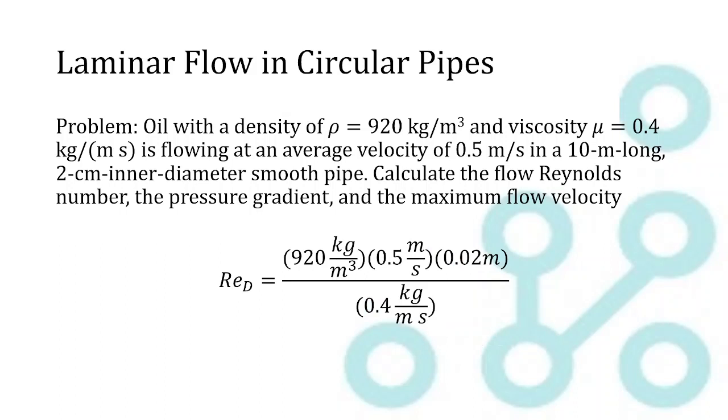So this is what that looks like. We're going to put the units in here as well and make sure that they all cancel since the Reynolds number is unitless. So we can go through, cancel our units here, kilograms cancel, seconds cancel, meters in the numerator cancel down to a single meter, and then those meters cancel as well. So we have all of our units canceling, which is what we want. And then if we calculate this out, we get a Reynolds number of 23. So that's the first part of our problem done.